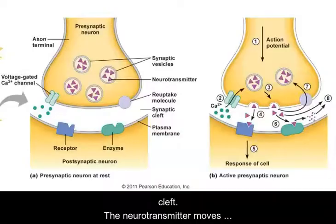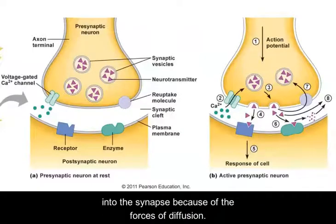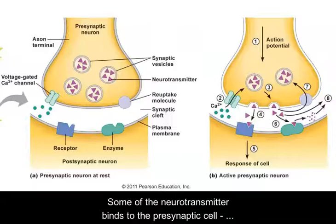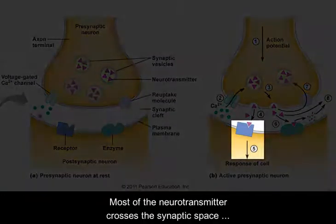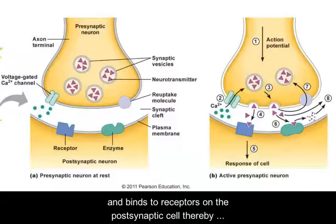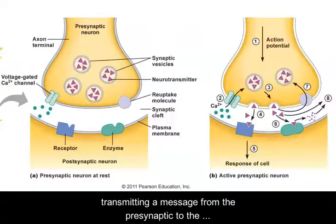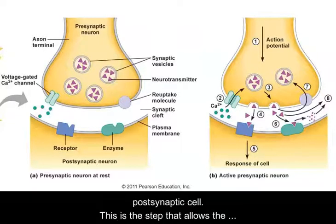The neurotransmitter moves into the synapse because of the forces of diffusion. Some of the neurotransmitter binds to the presynaptic cell, acting like a shutoff valve, telling the cell to stop releasing more neurotransmitter. Most of the neurotransmitter crosses the synaptic space and binds to receptors on the postsynaptic cell, thereby transmitting a message from the presynaptic to the postsynaptic cell. This is the step that allows the transmitting of messages from one neuron to the next.